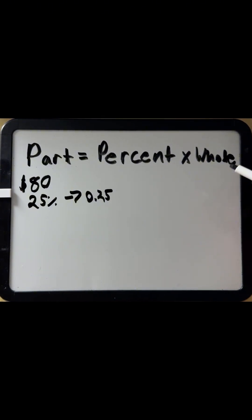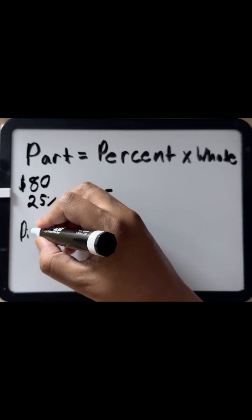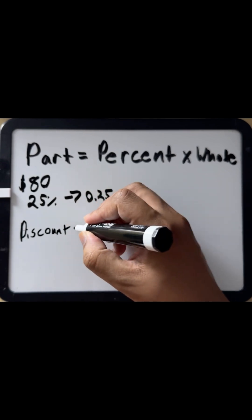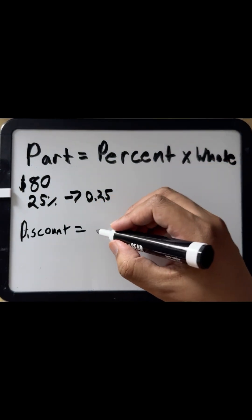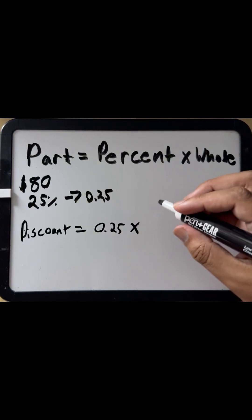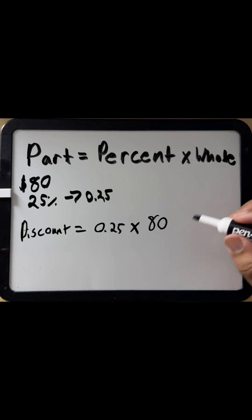All right. So now we simply plug our variables in. Our part would be our discount equals our percent 0.25 times our whole, which is $80. This equals $20.